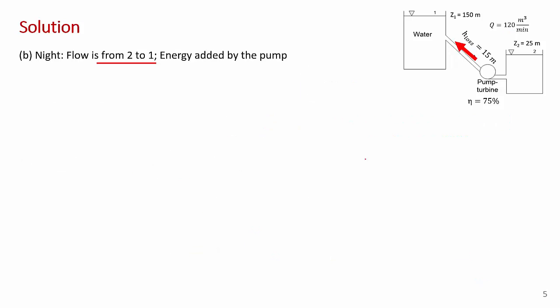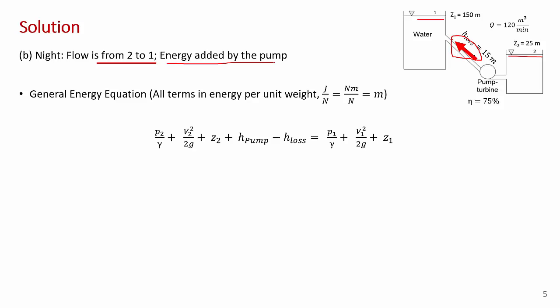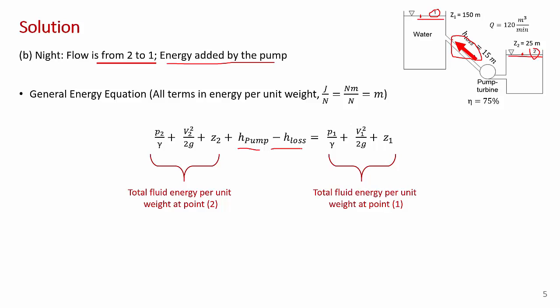For part B, the flow is going in the opposite direction — pumping water from the lower reservoir to the upper reservoir in the nighttime condition, restoring energy to the upper reservoir. Energy is being added by the pump. The general energy equation in energy per unit weight now goes from point 2 to point 1: energy at point 2 plus energy added at the pump minus energy lost in the pipe equals total fluid energy at point 1.